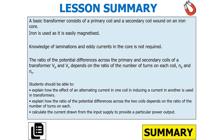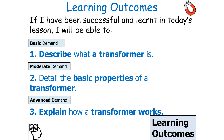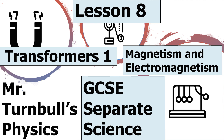A basic transformer consists of a primary coil and a secondary coil wound around an iron core. Iron is used as it's easily magnetised. The ratio of potential differences across the primary and secondary coils depends on the ratio of the number of turns on each coil. You should be able to explain how an alternating current in one coil induces a current in another, explain how the ratio of potential differences depends on the ratio of turns, and calculate the current drawn from an input to provide a particular power output. I hope you've enjoyed today's lesson on how a transformer works.